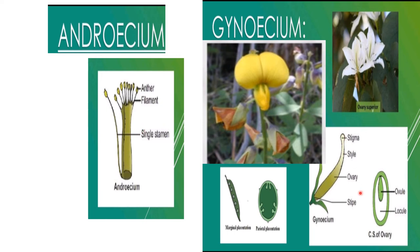Gynoecium: it is monocarpellary, superior and unilocular. There are numerous ovules on parietal placentation or marginal placentation.